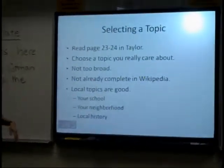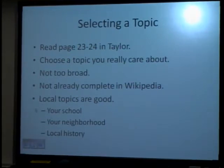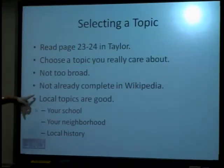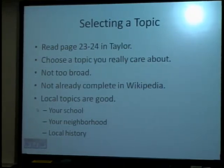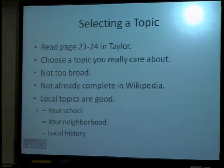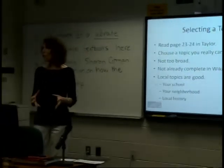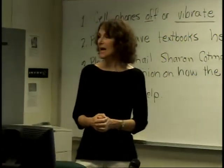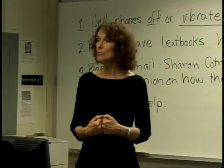We cover selecting a topic. I have them read pages 23 and 24 in Taylor, which tells them how to choose a topic. When they choose, I make sure it's not too broad and doesn't already have a complete Wikipedia article. We had some very good topic choices — one person chose the Hampton Coliseum and did an interview with Andy Greenwall, the person who ran it for many years. That student also found articles dating back to the 1970s when they just finished building the Coliseum.